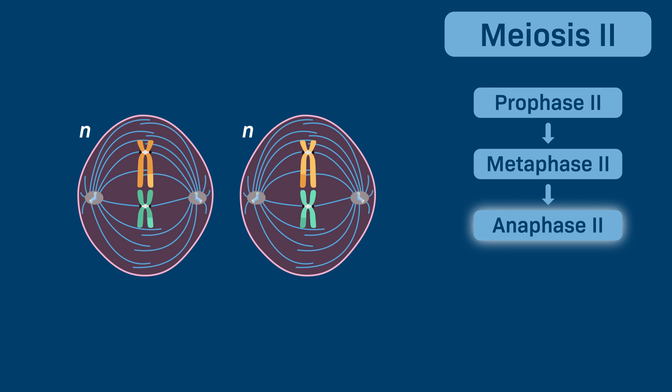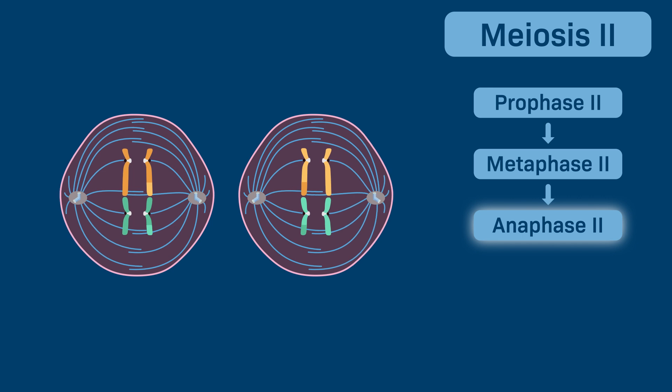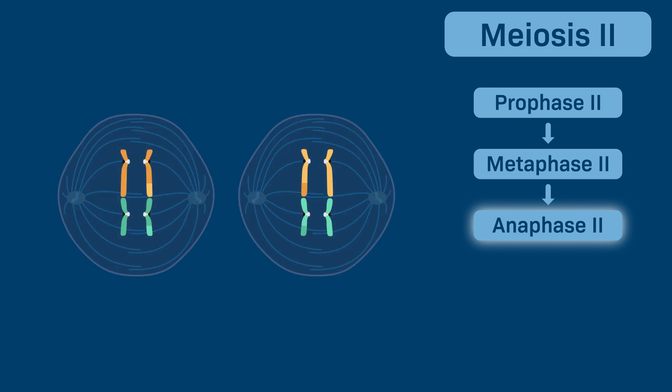During anaphase II, the sister chromatids of each chromosome separate, and the microtubules pull them toward opposite spindle poles of the cell. Once separated, the chromatids are now referred to as chromosomes.